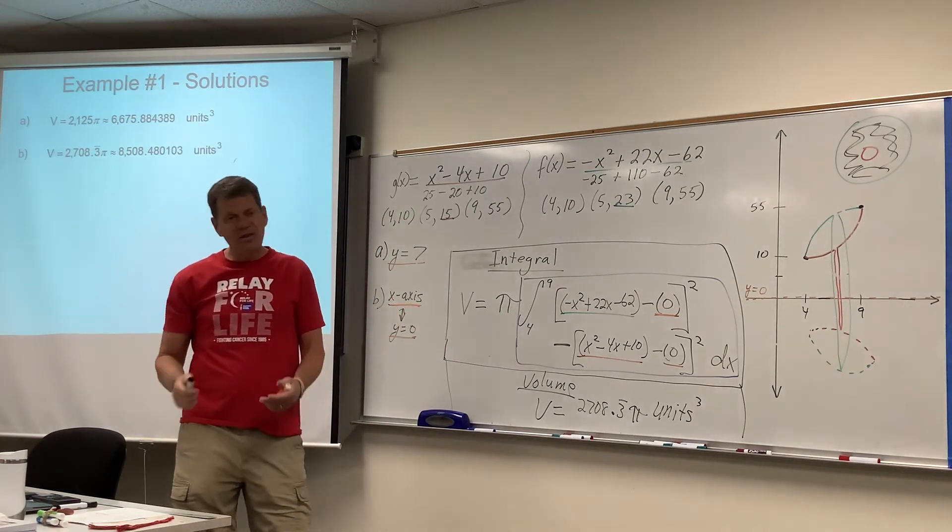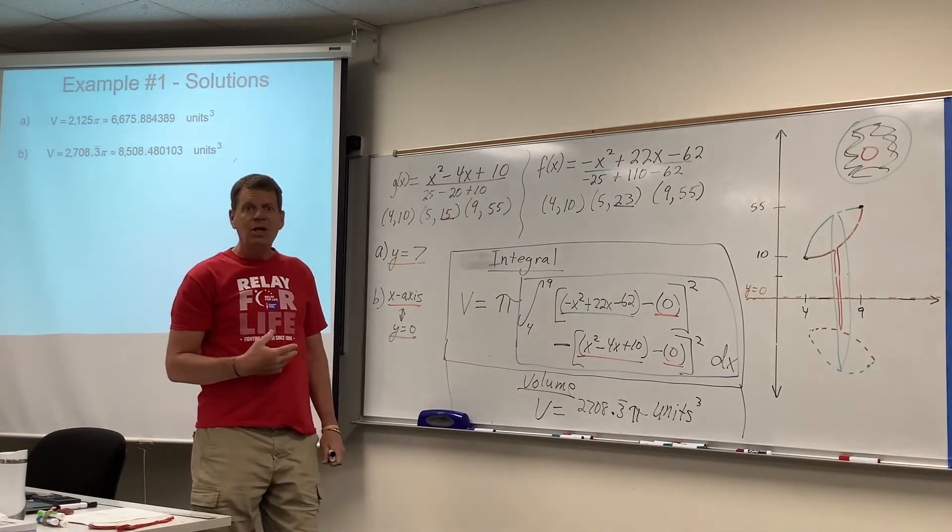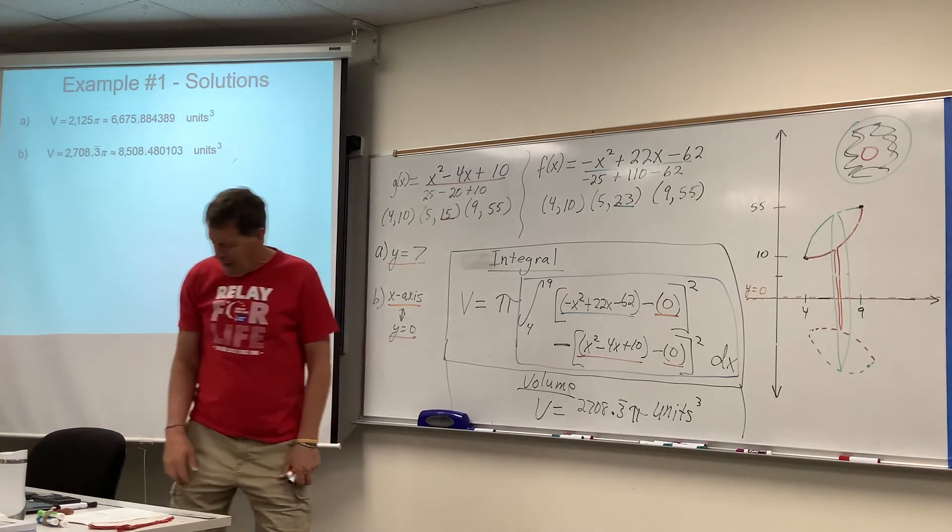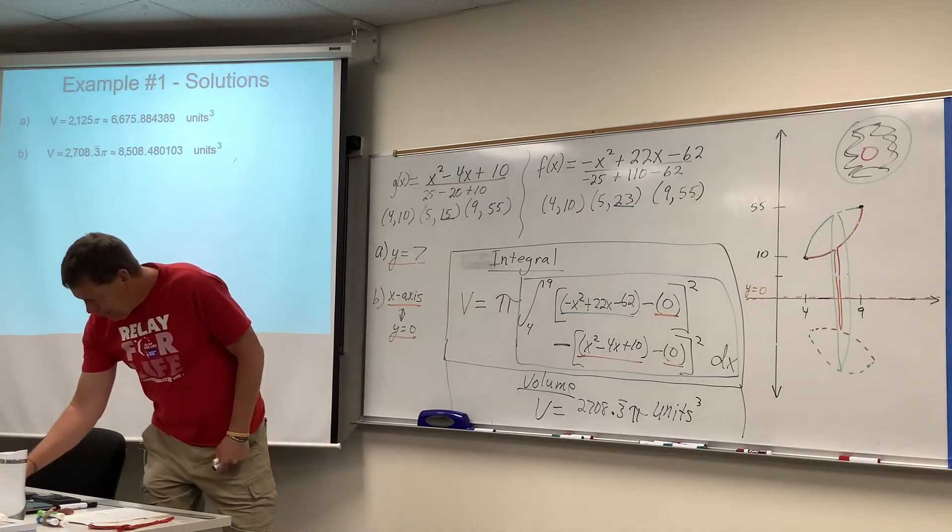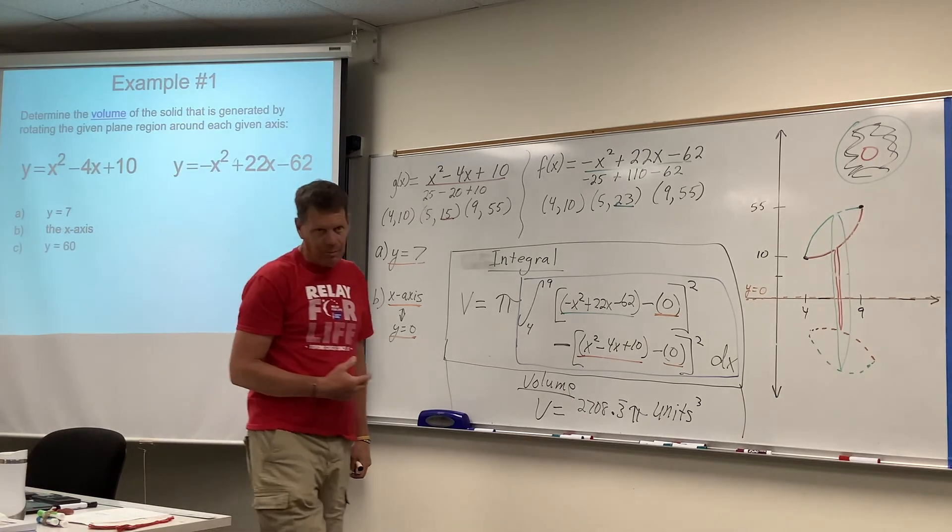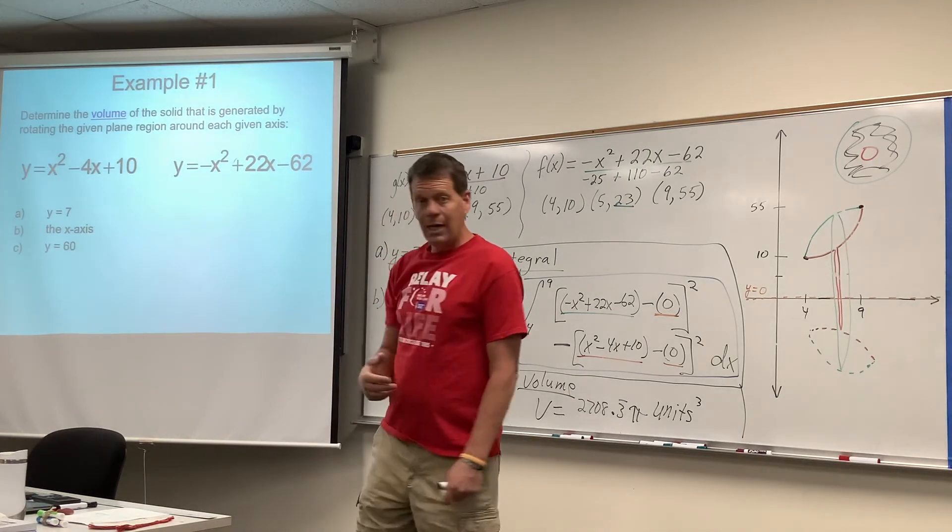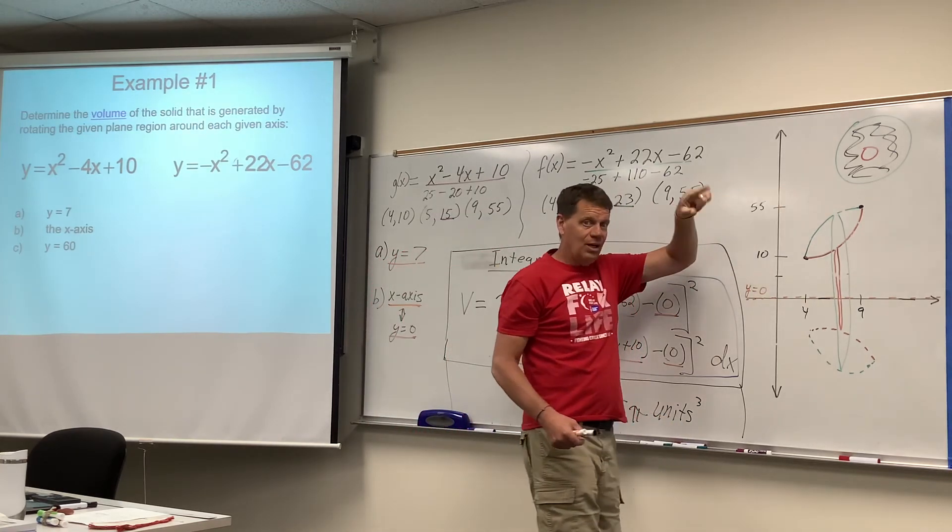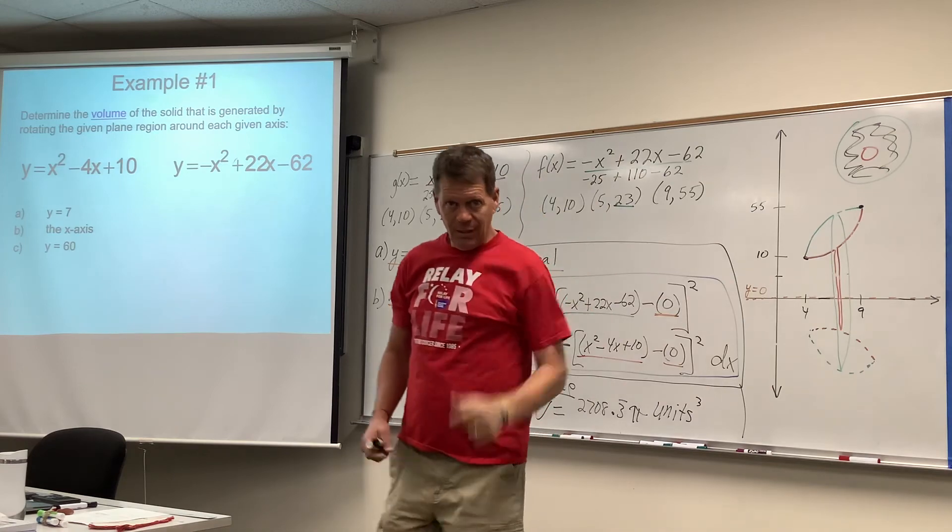So really, just a very small modification to that previous question, change the k into a zero. Okay. Now, something pretty significant is going to happen when we get to part c that we'll need to talk about. We're going to revolve it around y equals 60, which I want to point out to you is above here. And that's going to change things around a little bit. So we'll get to that.